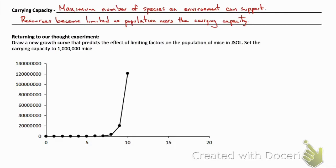As a population nears the carrying capacity, those resources become more limited, creating more competition. If we return to our experiment from before in which we were looking at the population size of mice in JSOL...